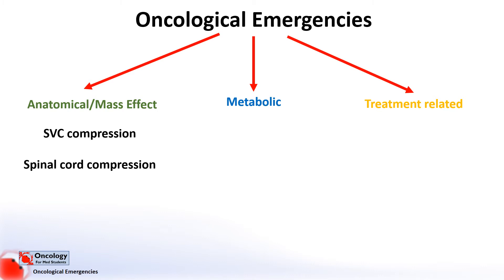In spinal cord compression, the effects of tumours near the spinal cord can put increasing amounts of pressure on the cord and cause irreversible damage. This can leave patients without the use of their limbs.